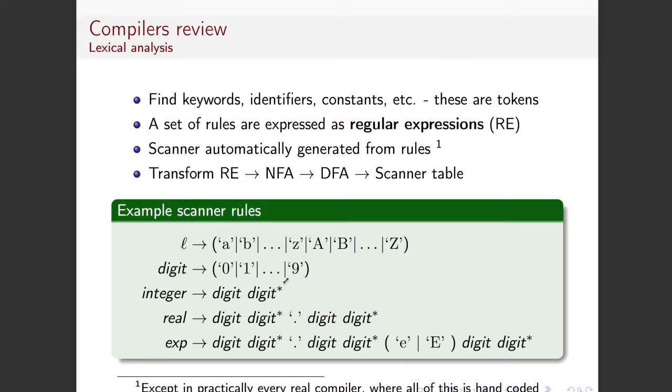A digit says that a digit can be any of the characters 0 to 9, and we say here that an integer is a digit followed by 0 or more digits. This little thing here is called a Kleene star. And then we've got a real number is a digit followed by some other number of digits, followed by a dot, followed by another digit, followed by some other digits. And a real number with an exponent looks like that, followed by something telling us what the exponent is over there. Make sense?